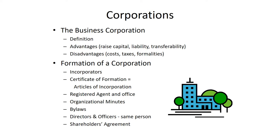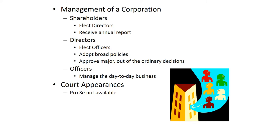If you have multiple owners, the shareholders may sign a shareholders agreement. In one of the next videos we'll talk about businesses with multiple owners, and the shareholders agreement should include provisions appropriate for a business with multiple owners. Here's the function of each group: the shareholders elect the directors and receive an annual report. The directors elect the officers, adopt broad policies, and approve major or out-of-the-ordinary decisions. The officers manage the day-to-day business under supervision of the board of directors.